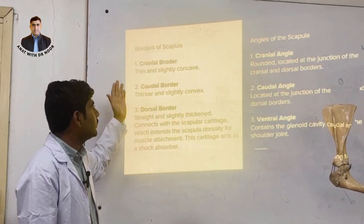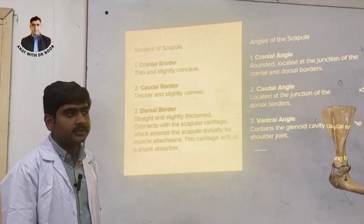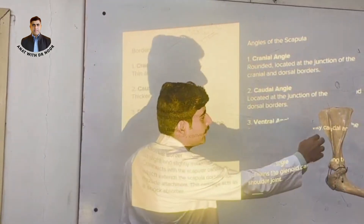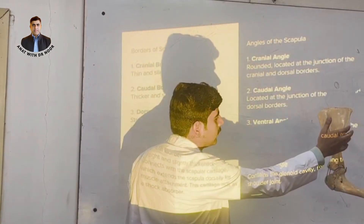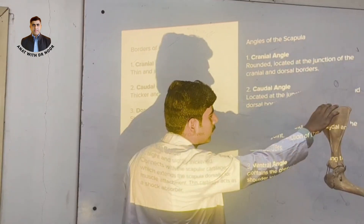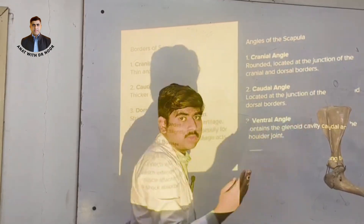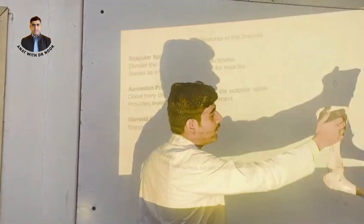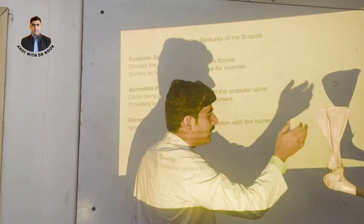The borders of the scapula: there are three borders — the cranial border, caudal border, and the dorsal border. There are also three angles: the cranial angle, caudal angle, and ventral angle.